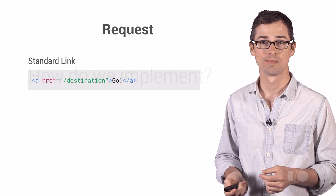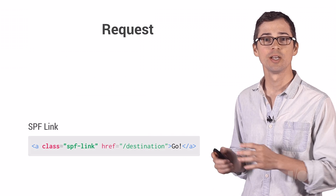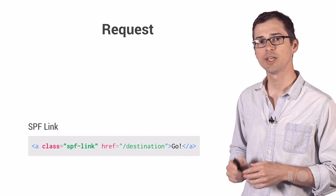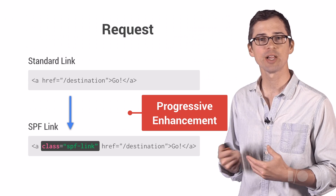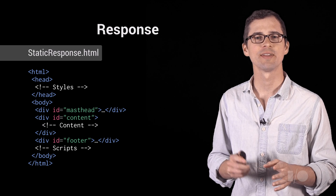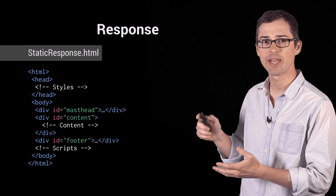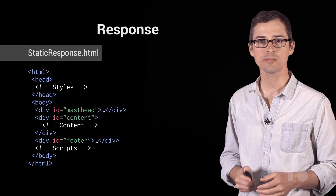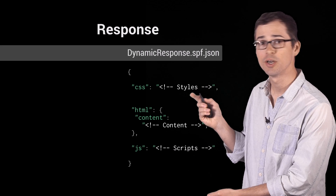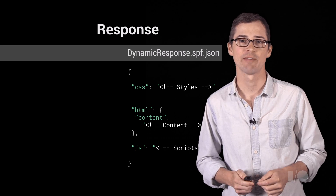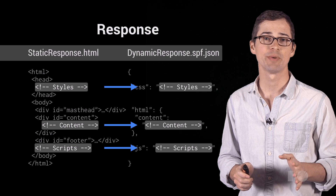So let's take a look at how it's implemented. We'll start with requesting content. Here's a link — clicking it will trigger a static navigation request. Here's that same link using SPF — clicking it will trigger a dynamic navigation request. We use progressive enhancement and a simple syntax to enable SPF for supported browsers. Now let's look at sending that content back. Here's the HTML of a response for a static navigation. In this example, we use a common layout of upper masthead, middle content, and lower footer. Here's that same response using SPF — only the fragment for the middle content is sent, because the masthead and the footer don't need to change. JSON is used for transport during dynamic navigation. The fragments for static navigation map directly to those for dynamic navigation, and this makes implementation very easy.